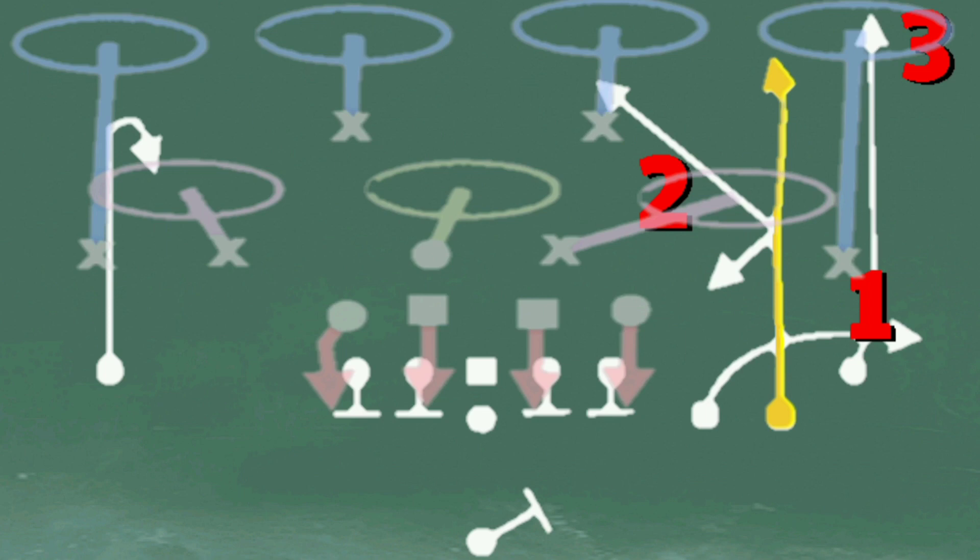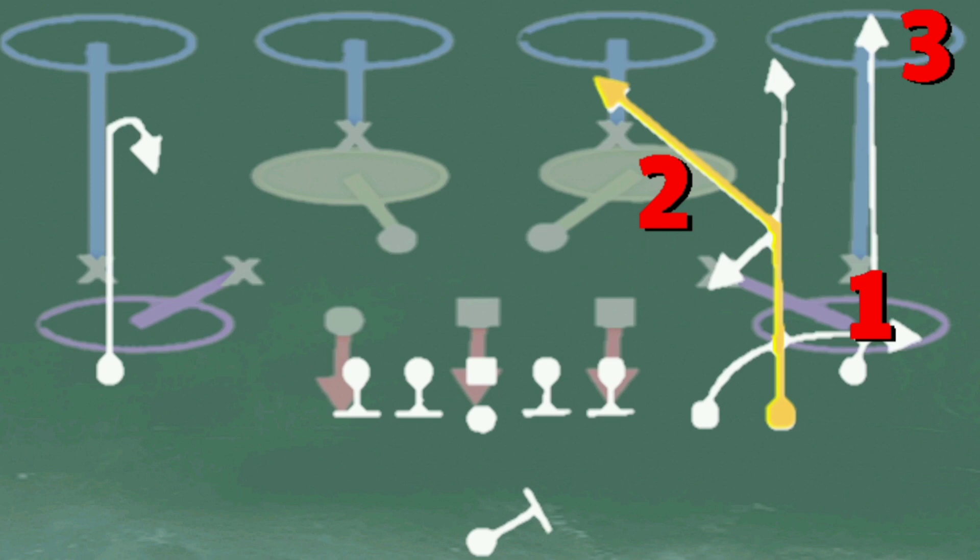Versus 4 drop, everything is pretty much the same as verse cover 3. The big difference being the streak read converts to a post, but you should still be hitting the flat pretty consistently.